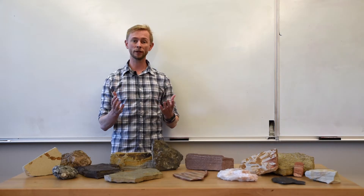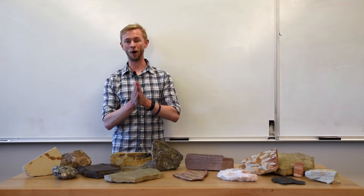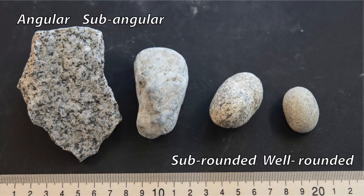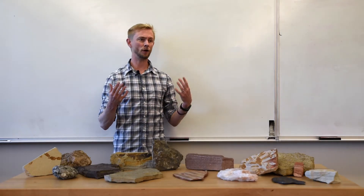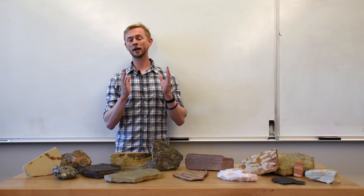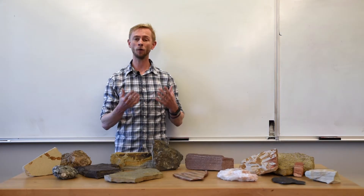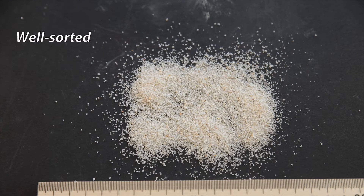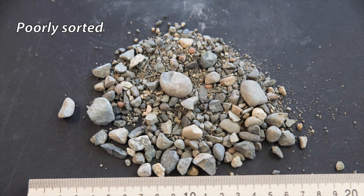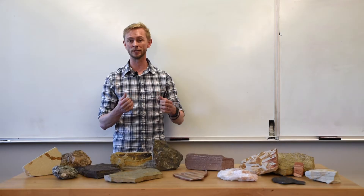Clast shape refers to how rounded the individual pieces of sediment are. Angular clasts have lots of flat surfaces and sharp edges, and this grades towards well-rounded clasts that are very smooth, almost spherical in shape. When we're dealing with a group or collection of all sorts of different pieces of sediment, we can classify the range of grain sizes by how well-sorted the sediments are. Very well-sorted sediments have all the individual pieces of approximately the same size, and this ranges all the way to very poorly-sorted sediments that have a huge range of grain sizes present within one sample.